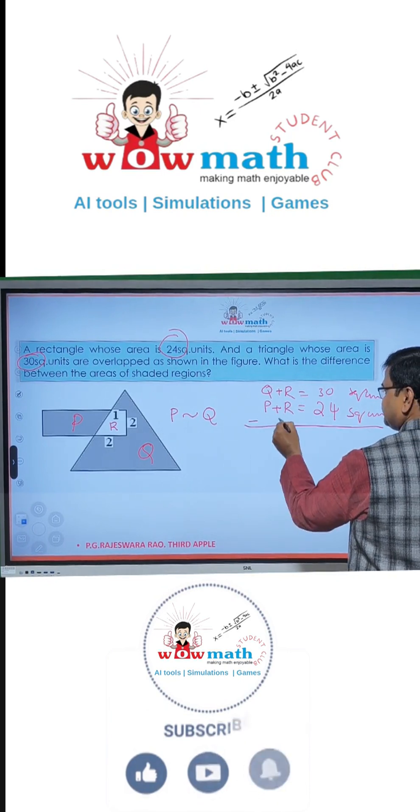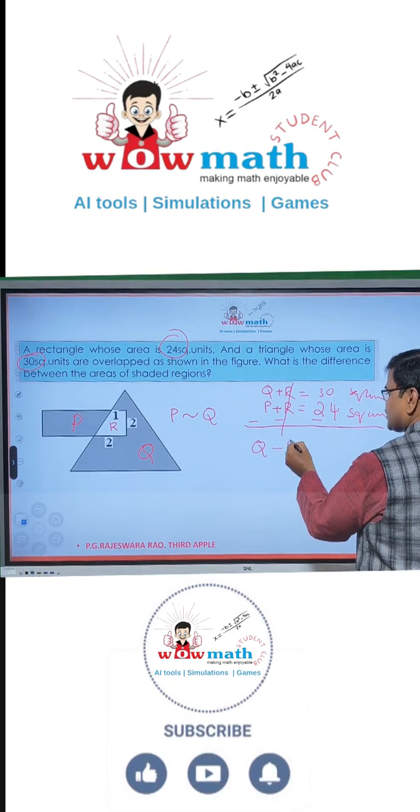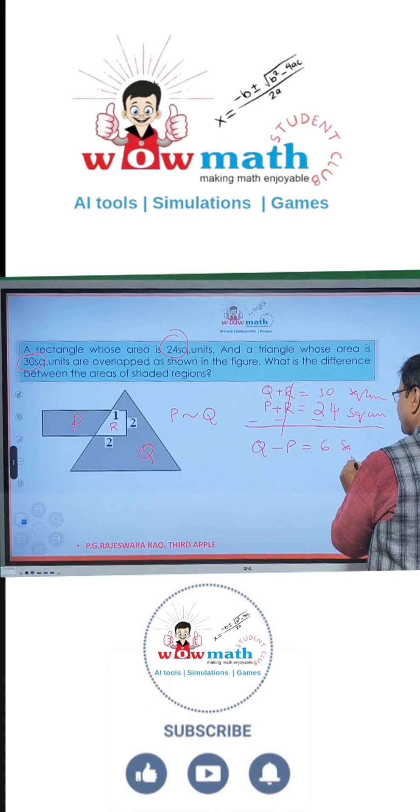So now subtract them. Plus R minus R gets cancelled. Q minus P is equal to 6 square units.